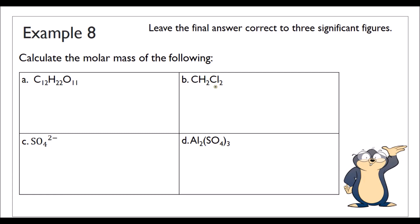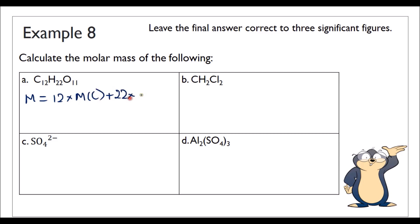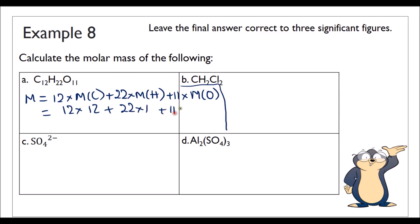Example 8a: Molar mass of sucrose, C₁₂H₂₂O₁₁. That's 12 times the molar mass of carbon plus 22 times the molar mass of hydrogen plus 11 times the molar mass of oxygen: 12 times 12 plus 22 times 1 plus 11 times 16 = 144 plus 22 plus 176 = 342 grams per mole.